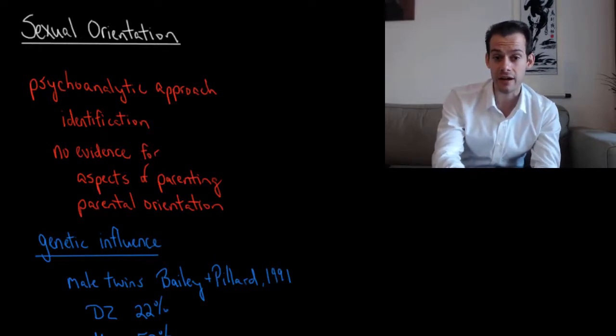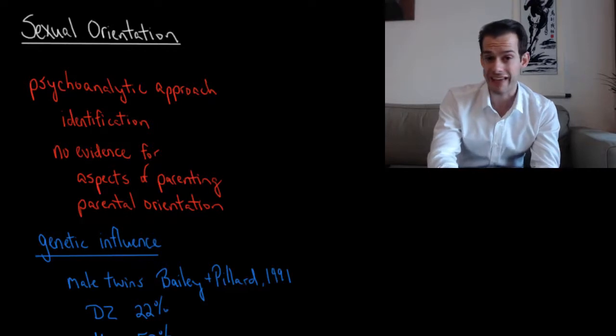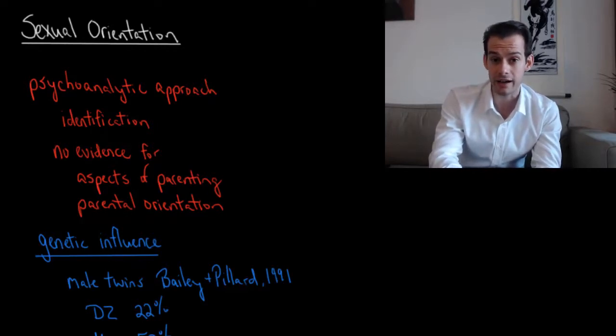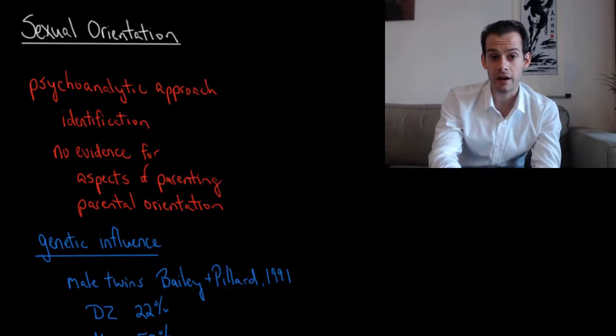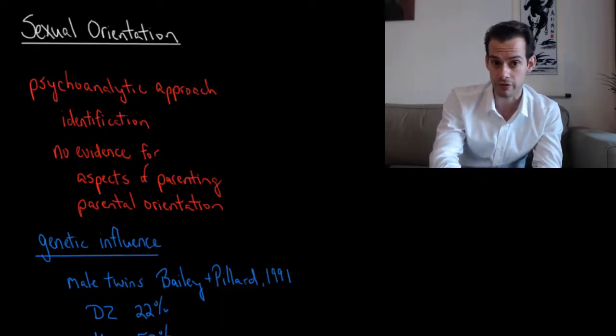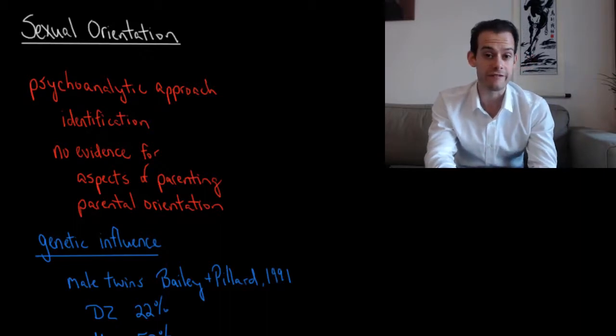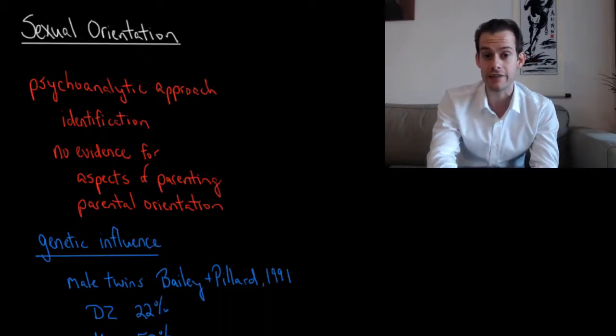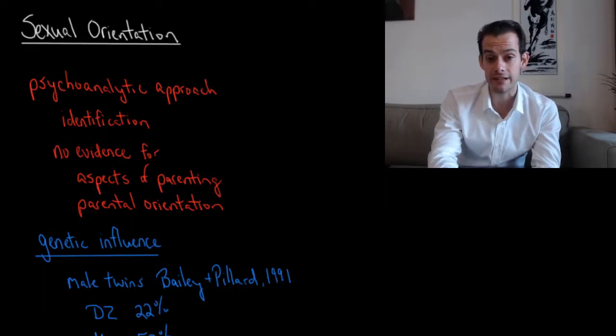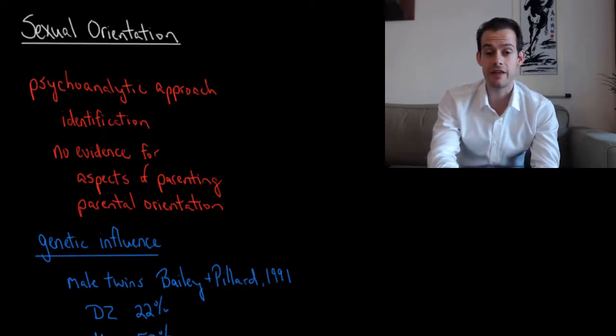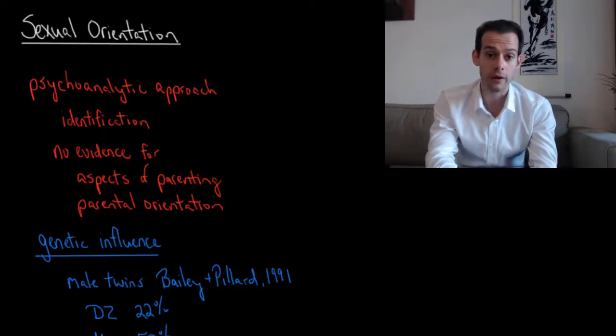In the unit on personality I talked about the psychoanalytic approach to personality and this included the Freudian idea of identification. This was the idea that during the phallic stage of Freud's psychosexual stages of development, the child identifies with the same-sex parent and this is how the child acquires proper gender roles. The idea would be if there was a fixation or a problem in development during this phallic stage, the child might not identify properly with the same-sex parent and this might lead to the development of abnormal sexual behaviors, things like sexual fetishes or homosexuality.